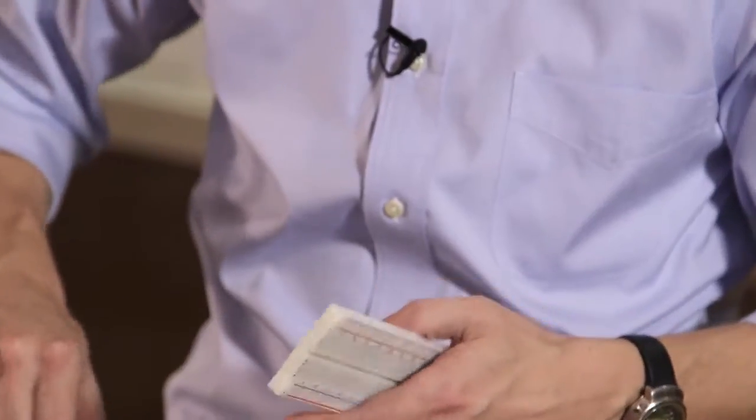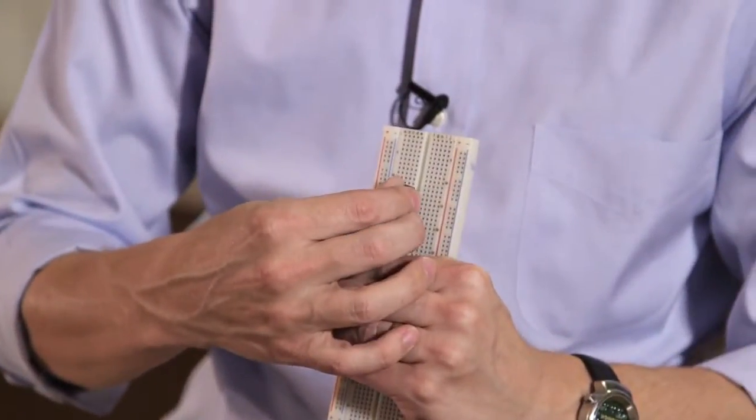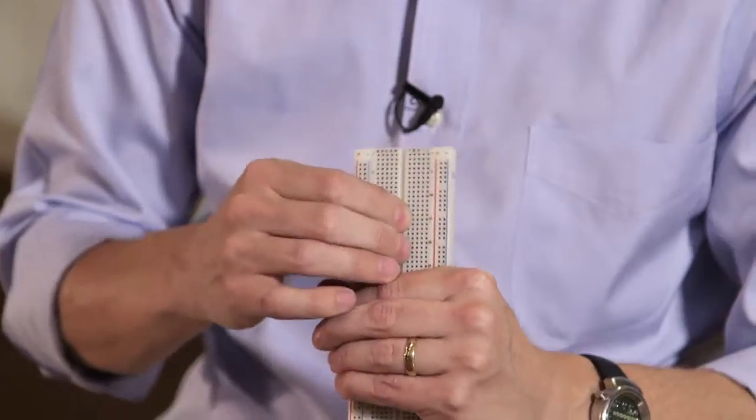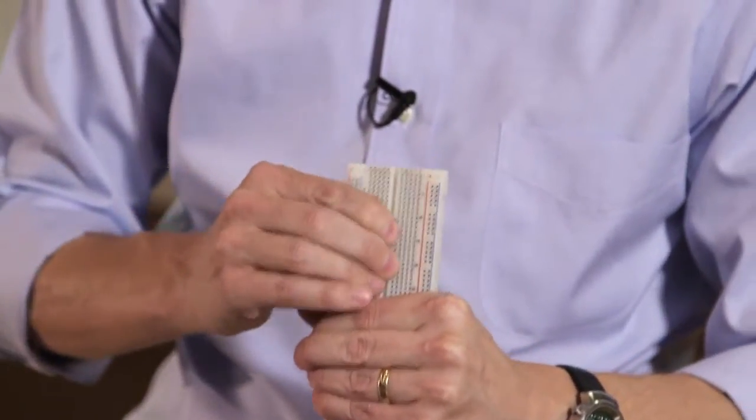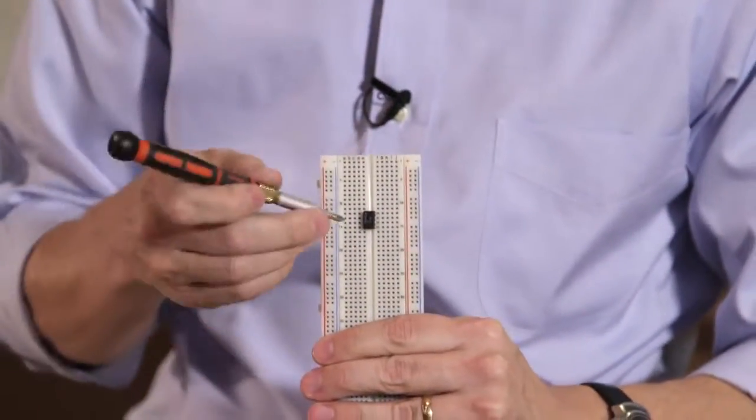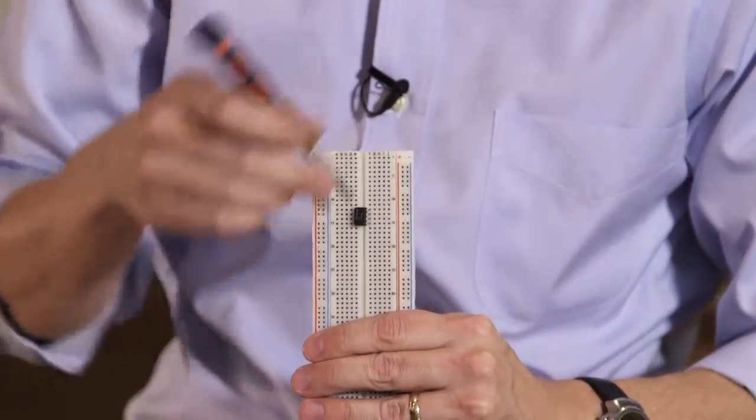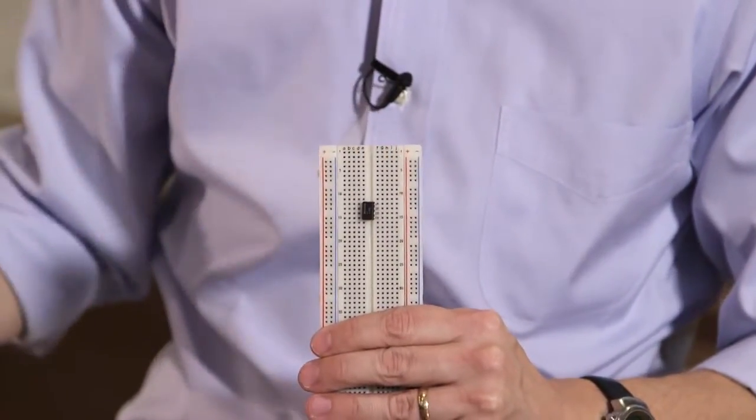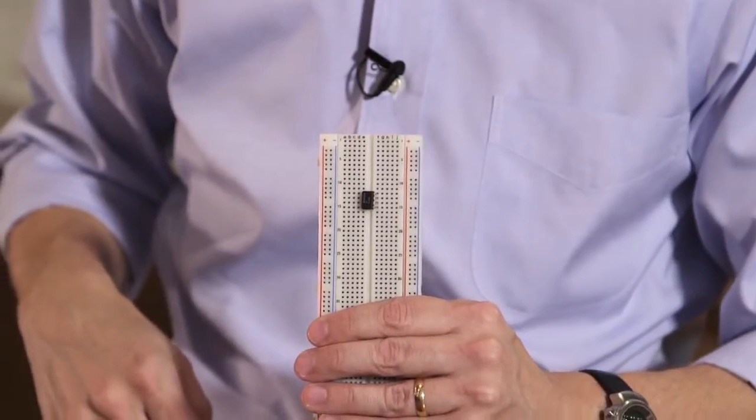For example, if you wanted to hook up this little operational amplifier, these little circuit chips like this, you shove them in the holes like that. And now you've got independent access to all these leads and access to all these leads by hooking into their groups of five row there.